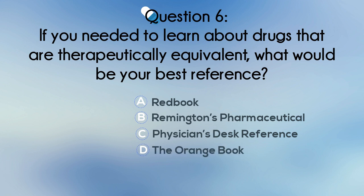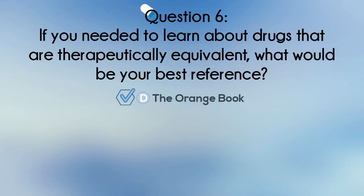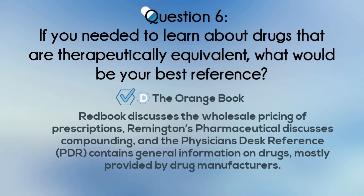The correct answer is D: The Orange Book. Red Book discusses the wholesale pricing of prescriptions. Remington's Pharmaceutical discusses compounding. And the Physician's Desk Reference, or PDR, contains general information on drugs, mostly provided by drug manufacturers.